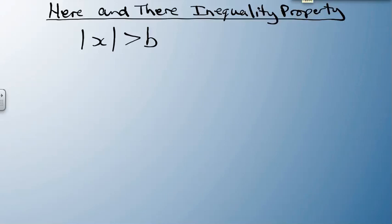Now, just like we had a property for when the absolute value of x is less than something, we've got a property called the here and there inequality property for whenever the absolute value of x is greater than something. And that one is written as x ends up being less than negative b, or x is greater than b.